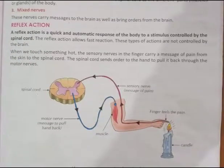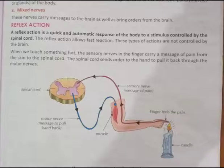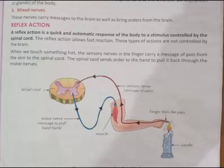Next topic: Reflex Action. A reflex action is a quick and automatic response of the body to a stimulus, controlled by the spinal cord. The reflex action is very quick and automatic — whatever is happening that causes it is called a stimulus.